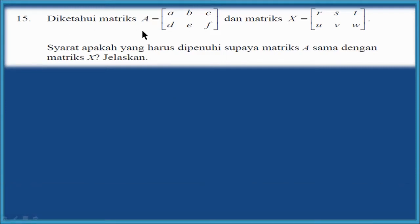Diketahui matriks A, yaitu matriks A, B, C, D, F, dan matriks X sama dengan matriks R, H, T, U, P, W. Syarat apakah yang harus dipenuhi supaya matriks A sama dengan matriks X? Jelaskan. Nah, bagaimana menyelesaikannya?